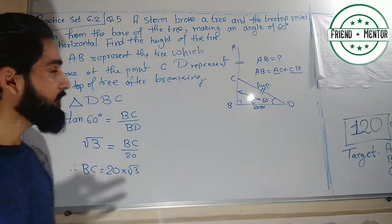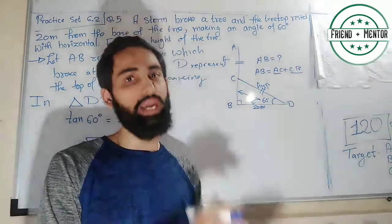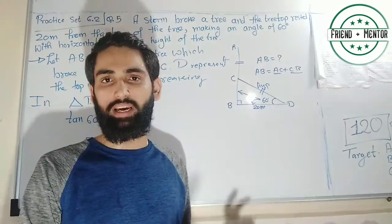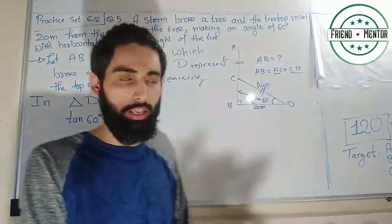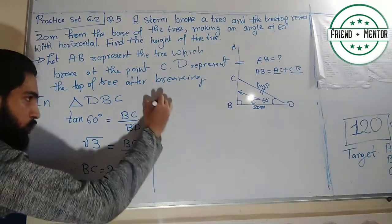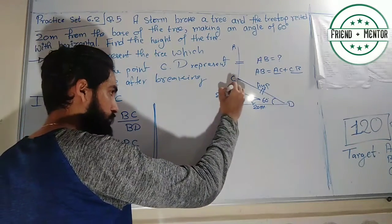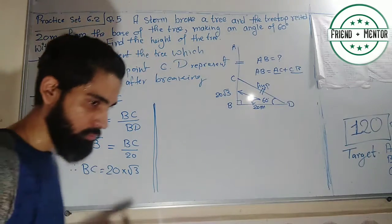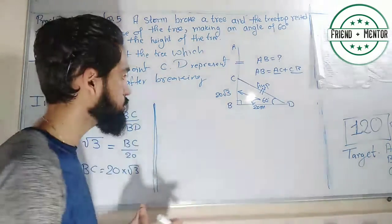Now the question is what value to use for √3. Since the textbook did not give a value, we keep it as √3. If a value like 1.73 had been given, we would use that as an approximation. Now I know BC is 20√3. Next I need to find CD, the hypotenuse.